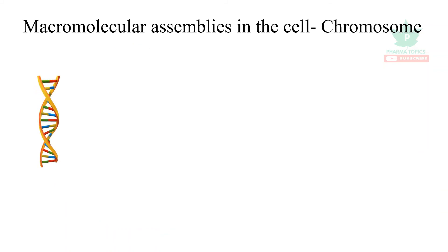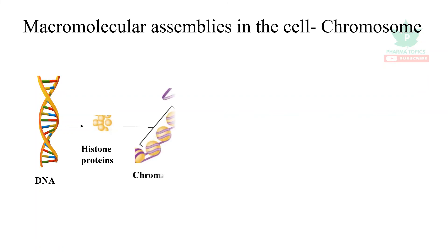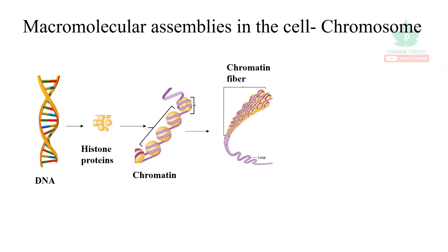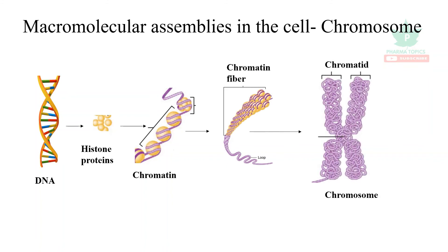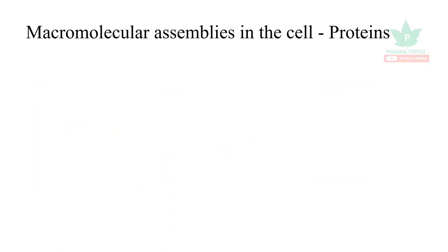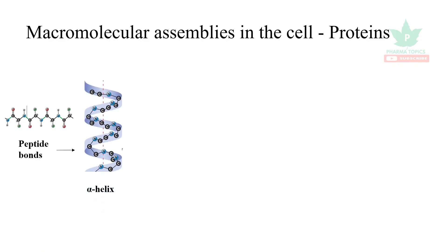Let us see the macromolecular assemblies in the cell. For chromosomes: DNA winds itself around protein sets called histone proteins, forming chromatin. The chromatin winds around itself to form chromatin fiber, creating a macromolecular assembly called a chromosome, which is made of chromatids.